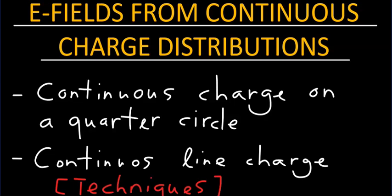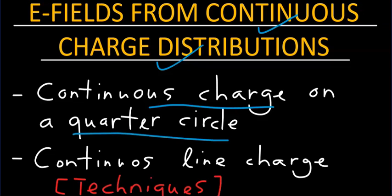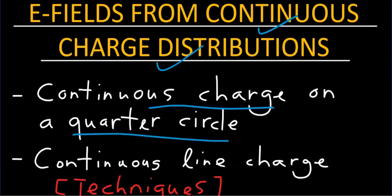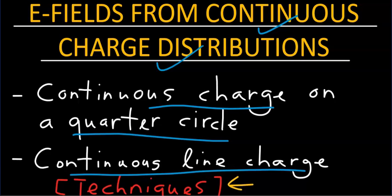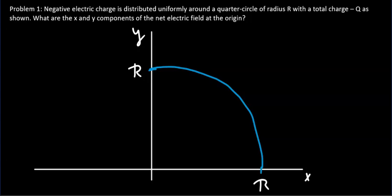In this video, we will talk about electric fields created by continuous charge distributions. Two examples we shall discuss are: continuous charge distribution on a quarter circle, and continuous charge distribution along a line. Our objective is to show the techniques involved in doing such calculations.